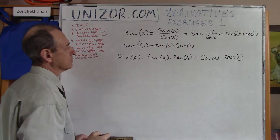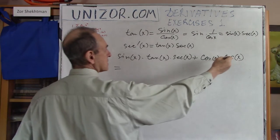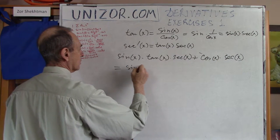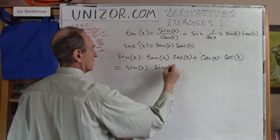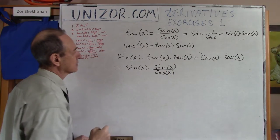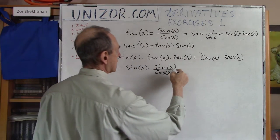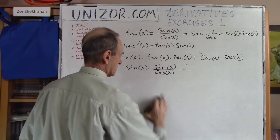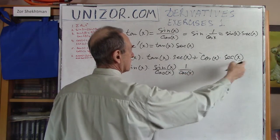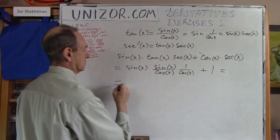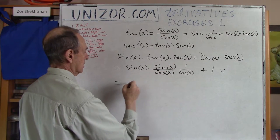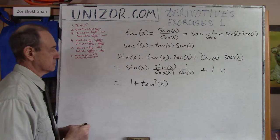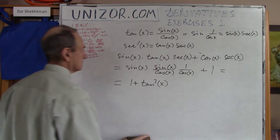How can we transform the result? Secant is 1/cosine, so sin(x)·sec(x)·tan(x) = sin(x)/cos(x) · 1/cos(x) = tan(x)/cos(x). And cos(x)·sec(x) = cos(x)·(1/cos(x)) = 1. Going back to sines and cosines: sin(x)/cos(x) is tangent, and we add 1, giving 1 + tan²(x). That's the derivative of tangent.